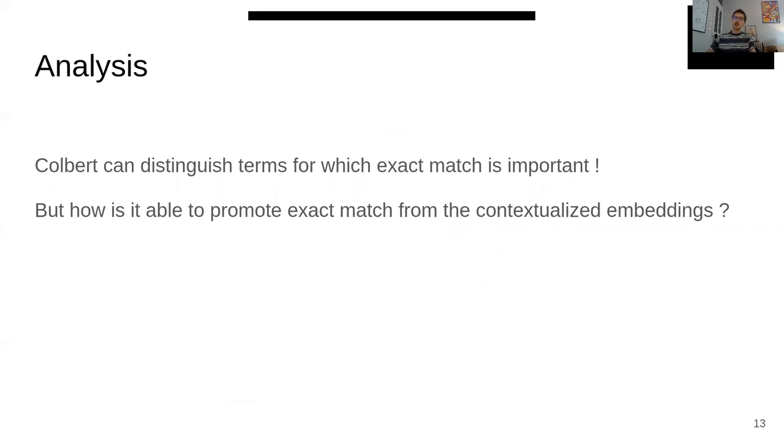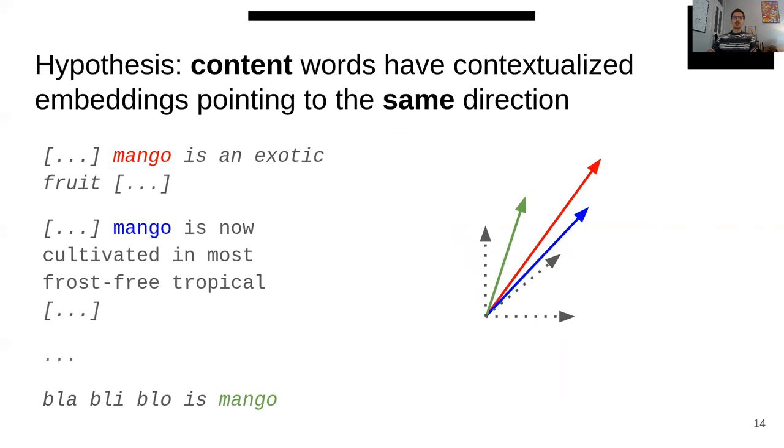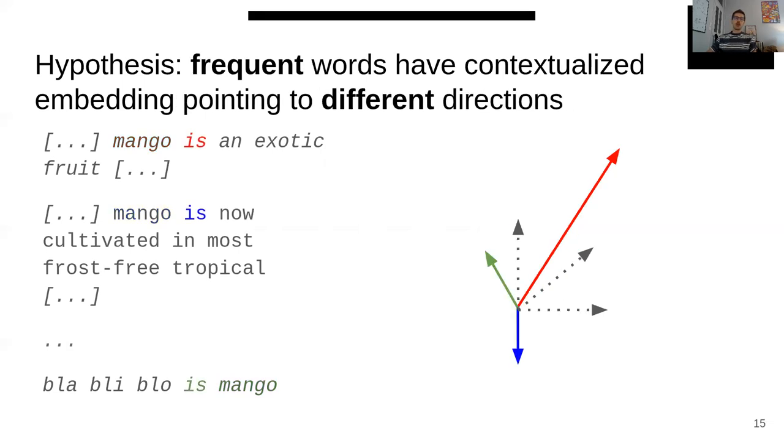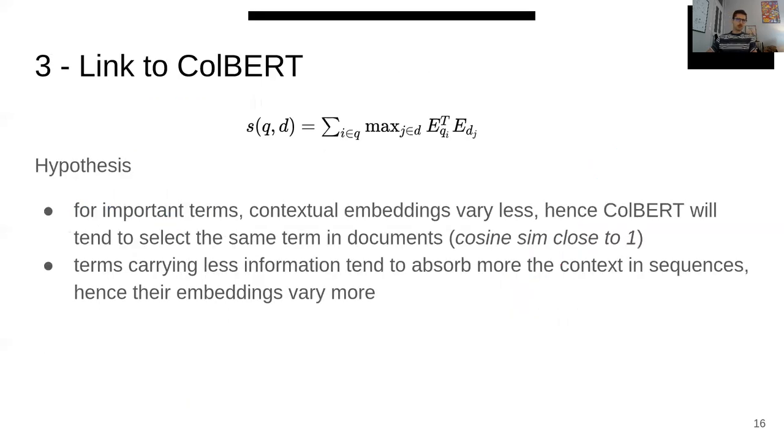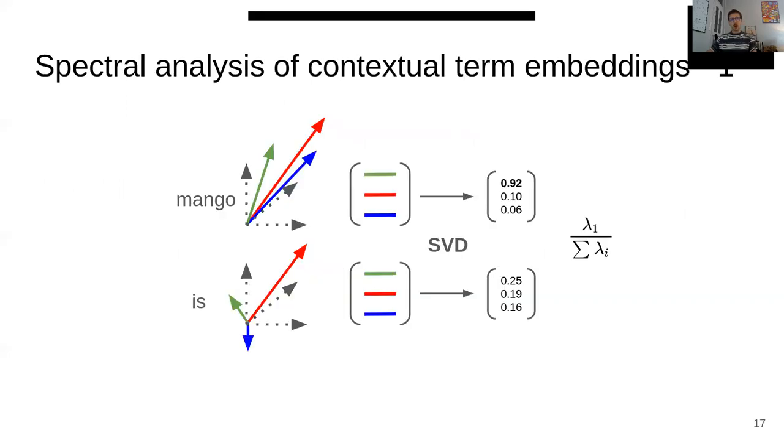We saw that ColBERT can distinguish terms for which exact match is important, and we wanted to understand how the model is able to do this. Our hypothesis is that content words have contextualized embeddings that point to the same region in the space, while function words, like 'is' in the example here, have contextualized embeddings pointing to different directions. Applied to ColBERT, if for important terms contextual embeddings vary less, then ColBERT will tend to select the same term in documents, because the cosine similarity between the query token and the document would be close to 1.